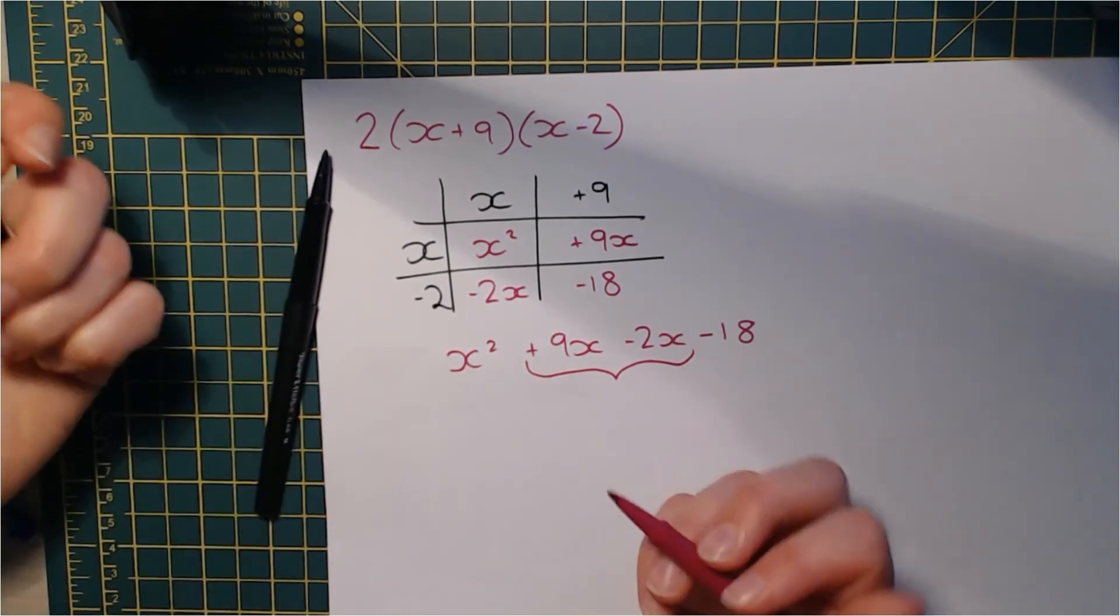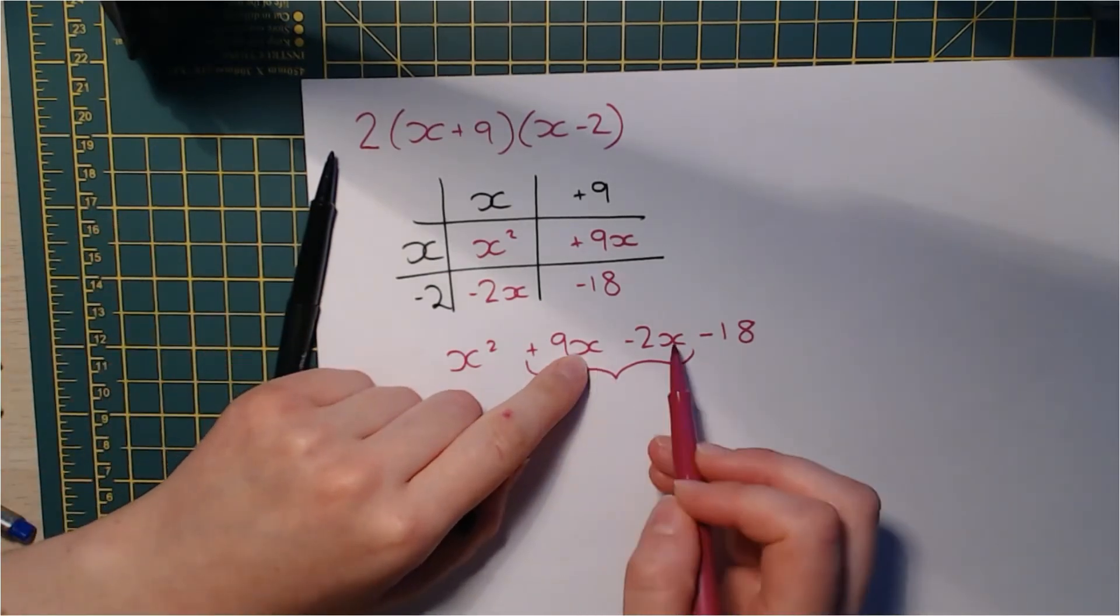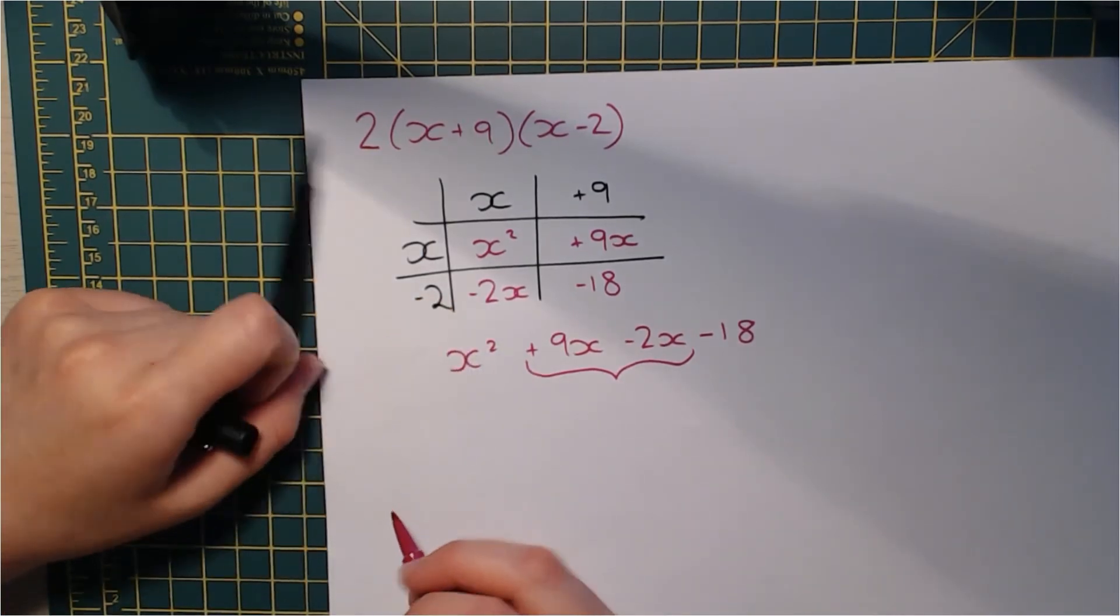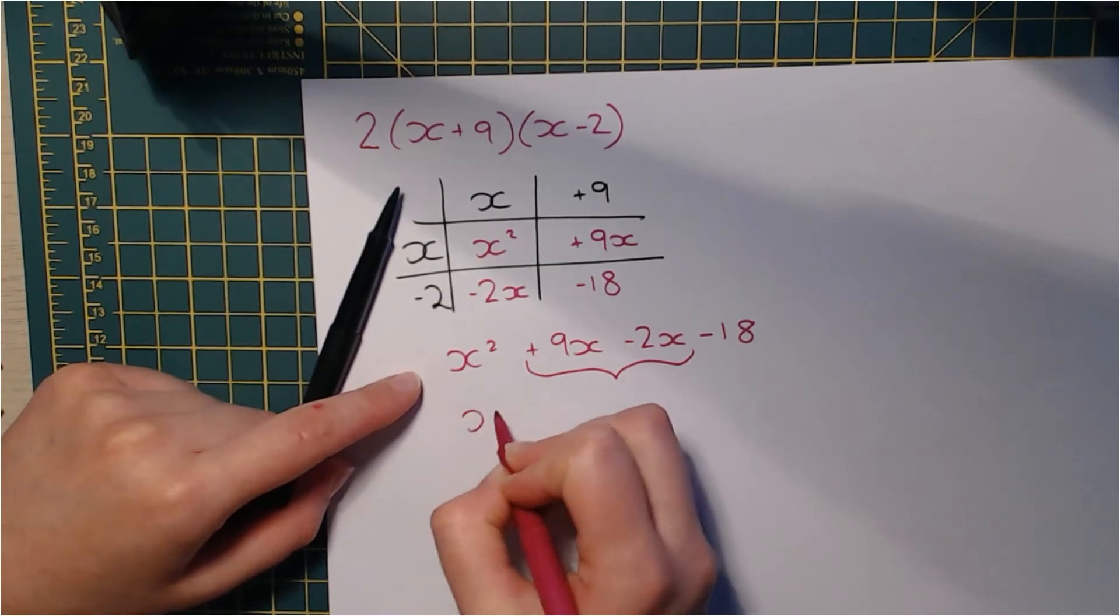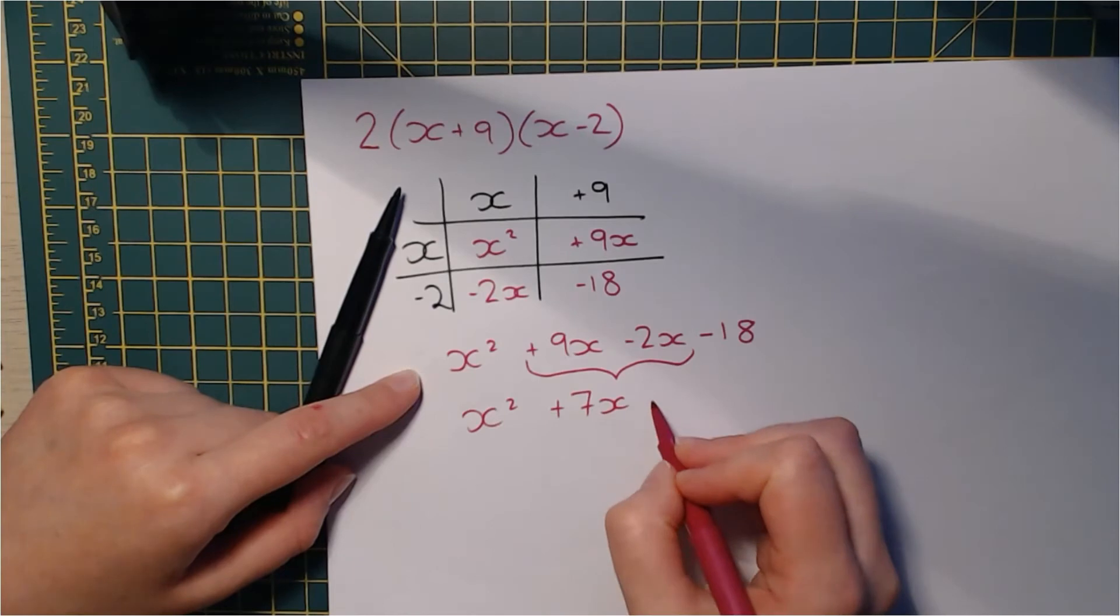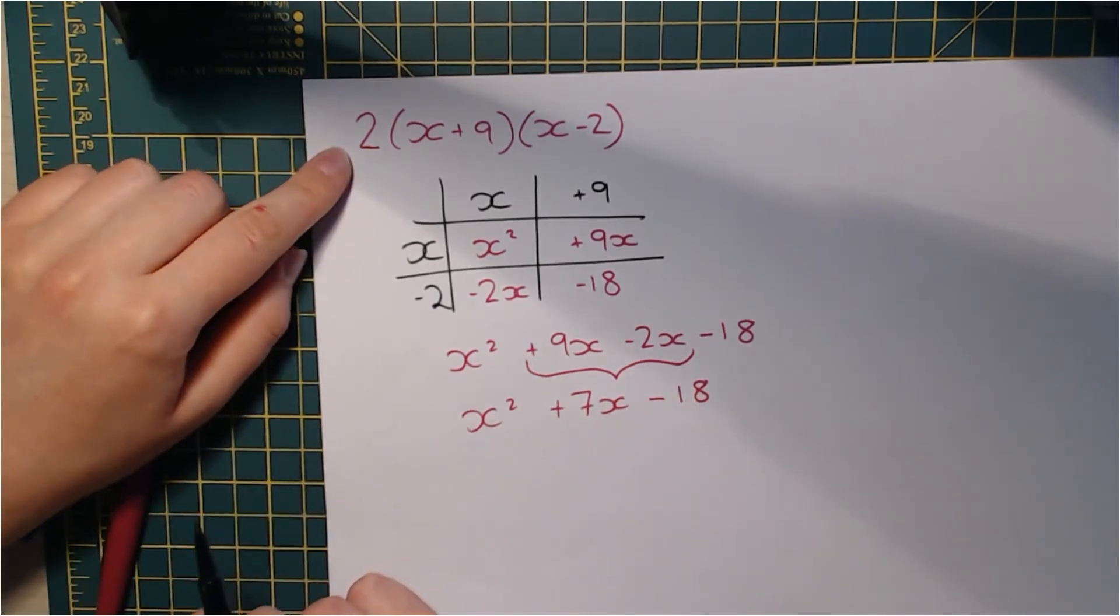It's a bit like, let me think, like x is an apple, x squared is apple pie. We can't actually mix the two things together. So we've got these here. We've got x squared still. Add 7x because 9 subtract 2 is 7, subtract 18. But we now have to consider this.